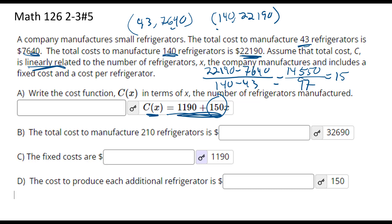We'll take one of the points. I'll take the point with the smaller values. So C minus 7640 equals, I'm doing Y minus Y1 equals M, which is 150 times X minus 43.